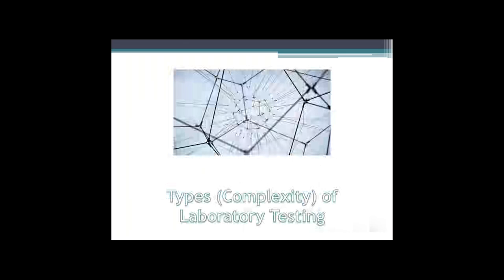Relating back to COVID testing when it first came out, COVID testing was not defined via a complexity because it was an EUA, but the EUA determined which environments the testing could be performed in. In most cases, particularly with PCR testing, it was determined it must be done in a high-complexity lab. In other cases, it was approved to be done at the bedside and in a waived testing environment. These depictions drove how we implemented the testing and what became part of the process as we initiated patient testing.